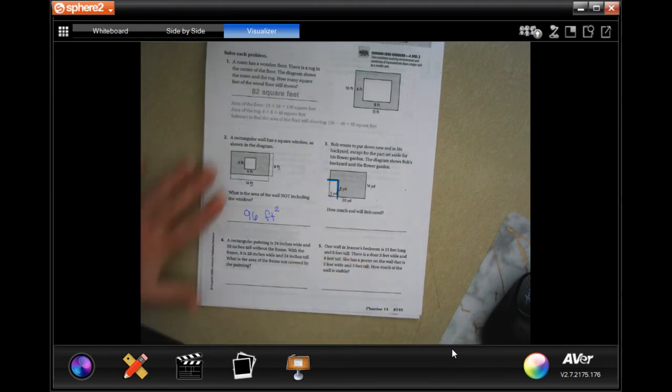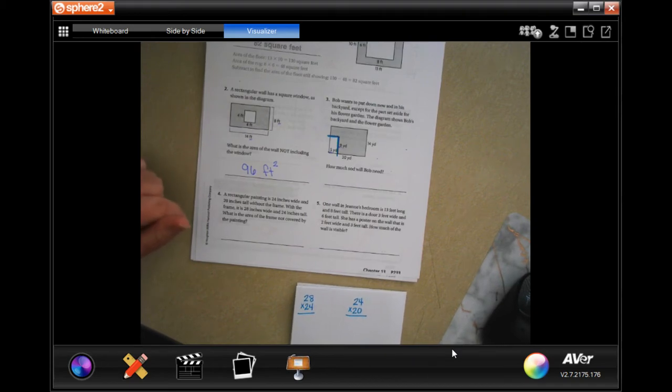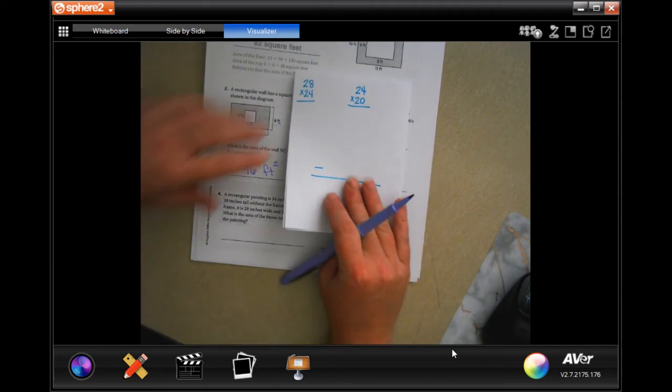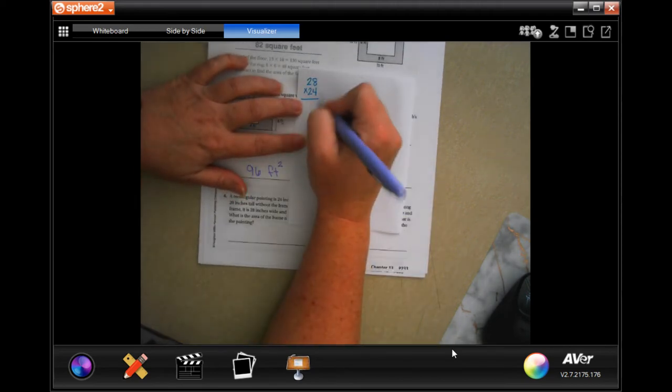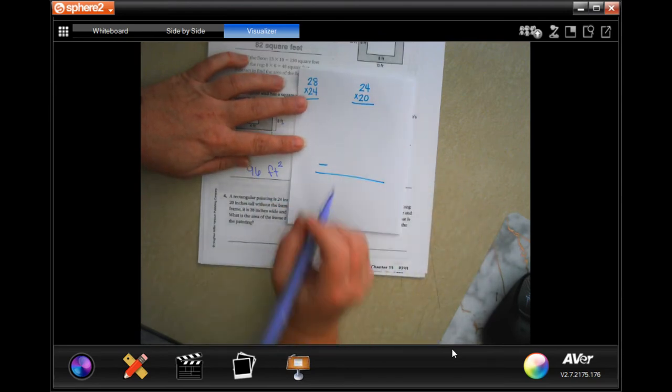We are going to go down and do number 4. A rectangular painting is 24 inches wide and 20 inches tall without the frame. With the frame, it's 28 inches wide and 24 inches tall. What is the area of the frame not covered by the painting? So, we are going to find the area of the whole thing and then subtract the area of the painting.